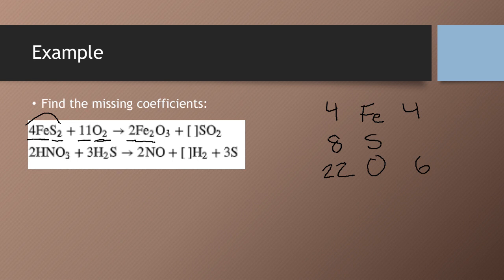On the right-hand side, we have four irons, six oxygens. We have another two here, and then we have one sulfur.